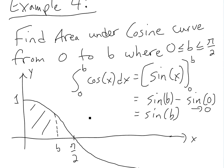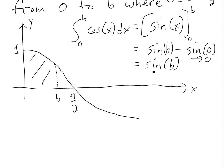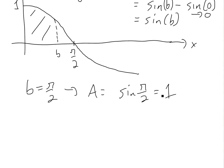So the area under it is just sine of b. If b equals pi over 2, then the area equals sine of pi over 2, which equals 1, because pi over 2 in radians is 90 degrees, so opposite over hypotenuse is 1 over 1.